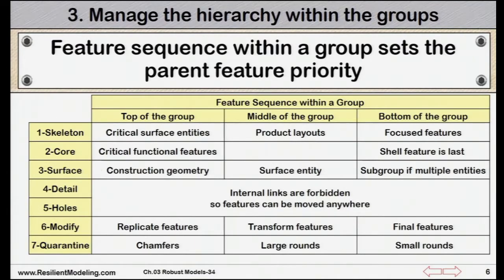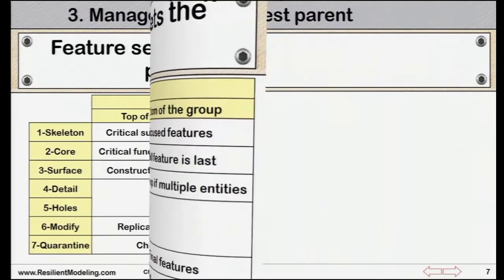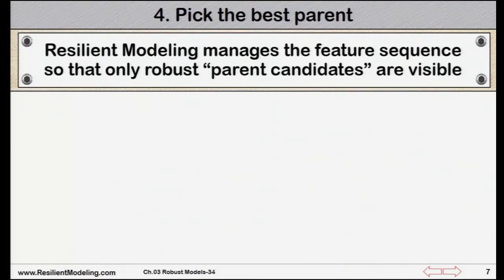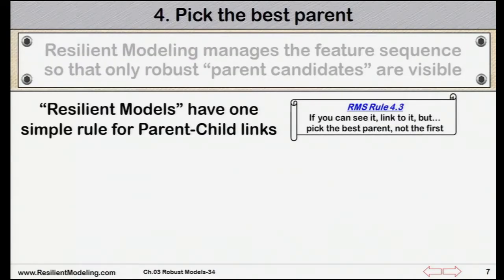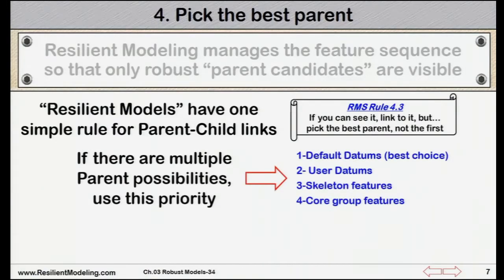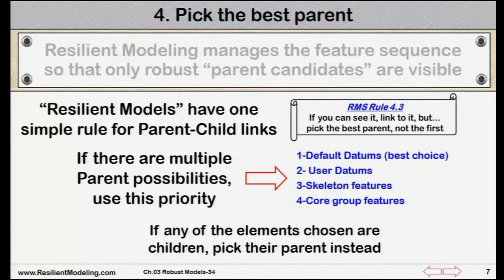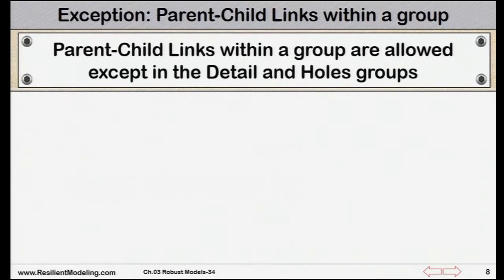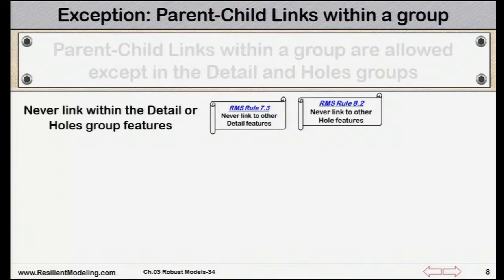Feature sequence within a group sets the parent feature priority. Resilient modeling manages the feature sequence so that only robust parent candidates are visible. For parent-child relationships, use rule 4.3: if you can see it, link to it — but pick the best parent, not the first. Default datums are the best choice, followed by user datums, then skeleton features, and lastly core group features. Parent-child links within a group are allowed, except in the detail and holes groups. Never link within the detail or holes group features.